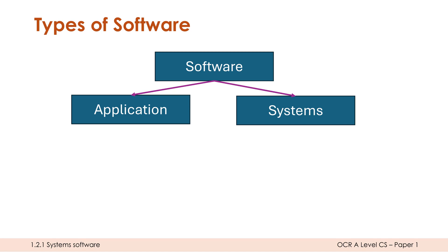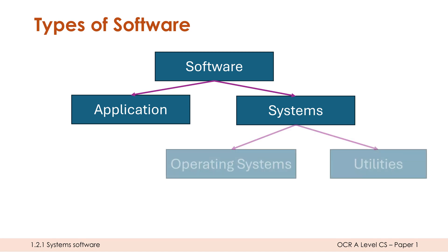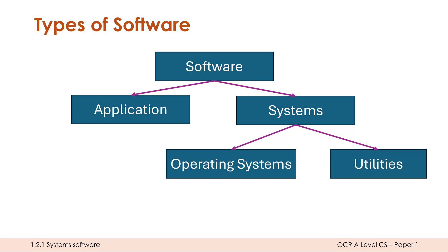It's important to have in our mental model that we are able to further subdivide these categories. For system software at least, we can look at this in terms of operating systems and also in terms of utilities. We'll focus on utilities more in future videos. The line between OSs and utilities blurs a bit, because a lot of utilities are built into operating systems nowadays.